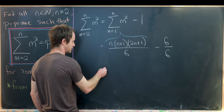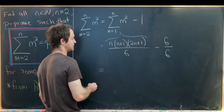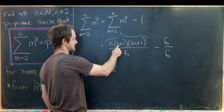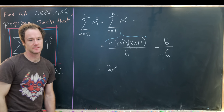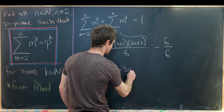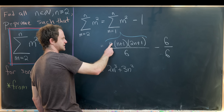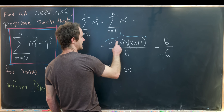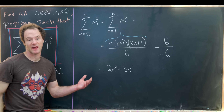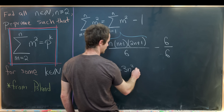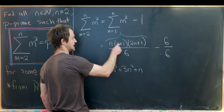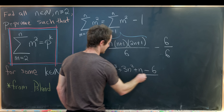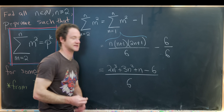Next we multiply this out. That gives us 2n³ from n·n·2n, then 3n² from n·n·1 and n·1·2n, then plus n from n·1·1, and then minus 6. This is all over 6.